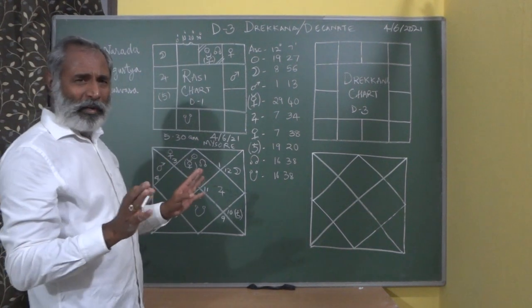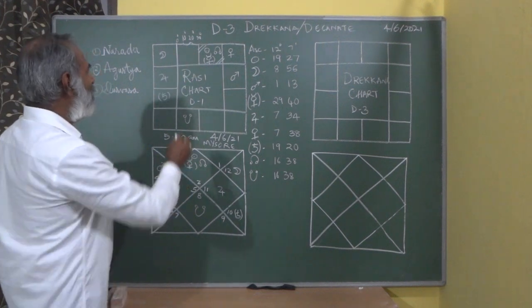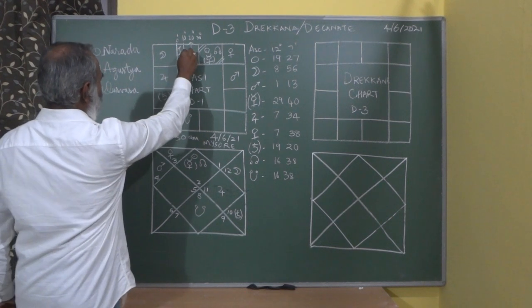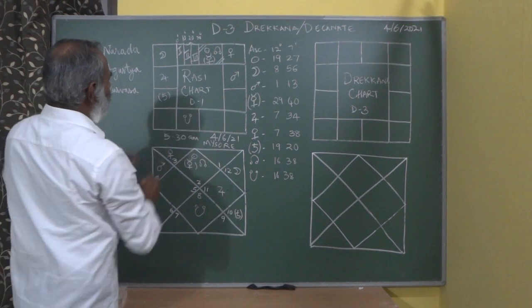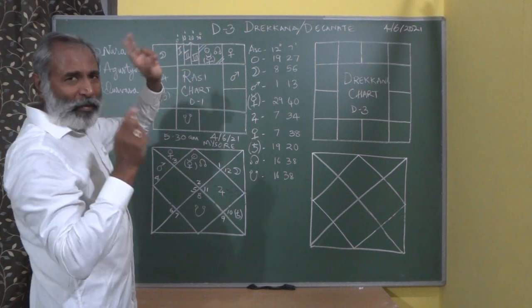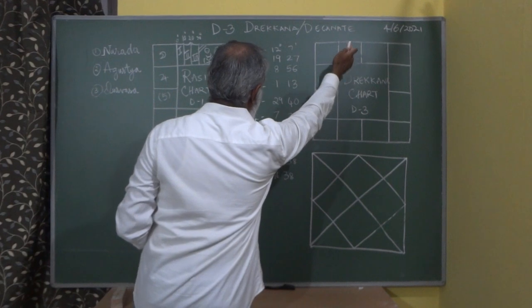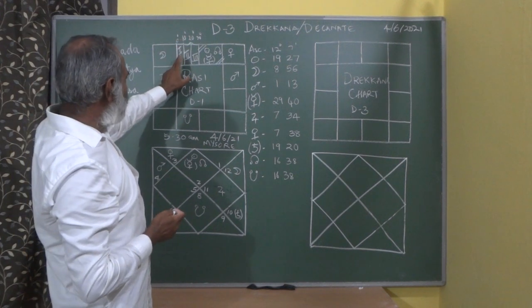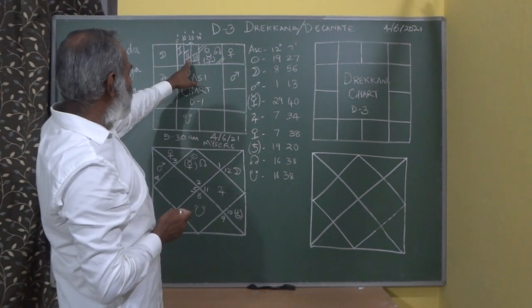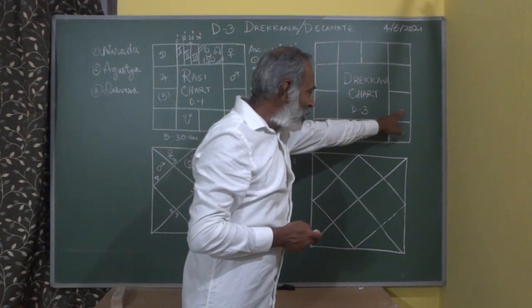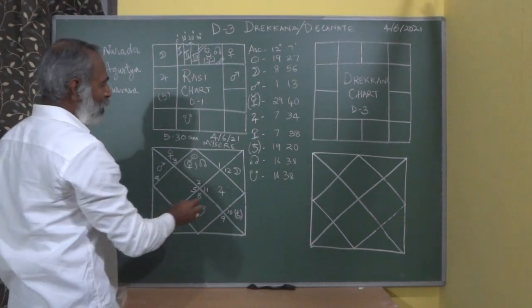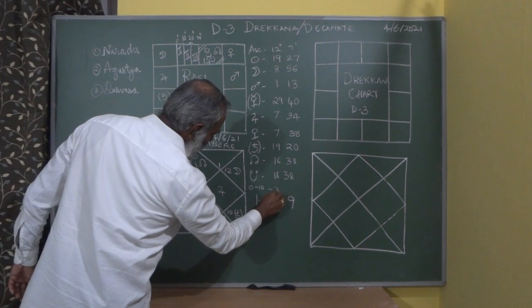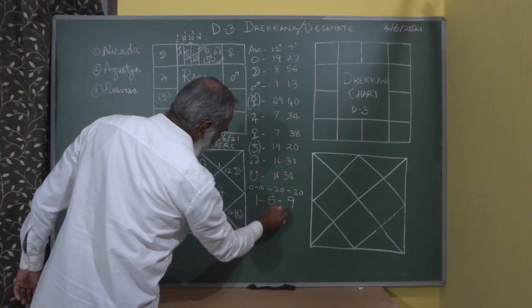The plotting is very simple in Drakana. For any given chart, three pieces are made: 0 to 10 degrees, 10 to 20 degrees, and 20 to 30 degrees. We call this the first piece, the second Drakana, and the third Drakana. This is how the plotting is done.